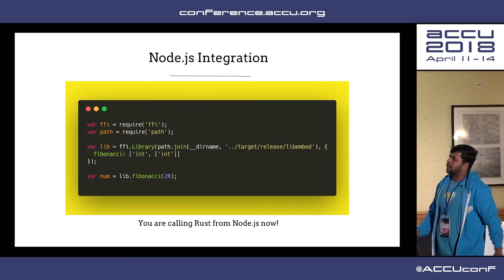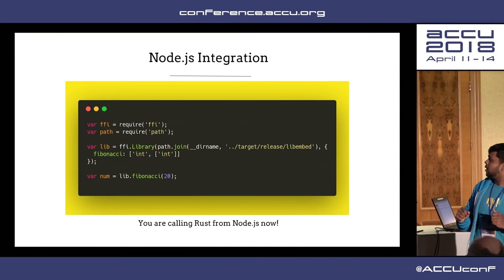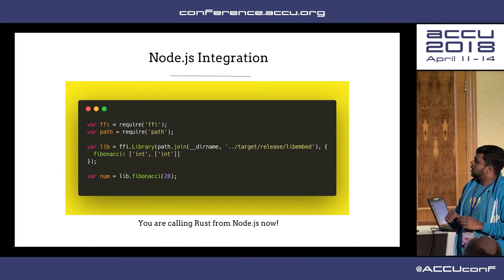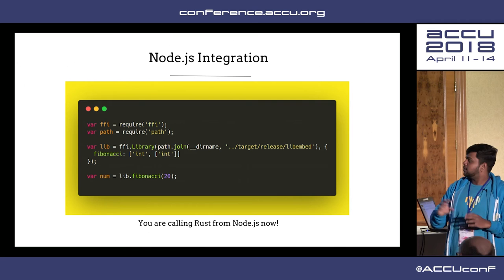It's a simple Fibonacci series example. I use the FFI node module — available in the Node.js registry — give the location of my dynamic library, define that this particular function takes an integer type and returns an integer type, and call my function. That's how we do a simple integration with JavaScript.